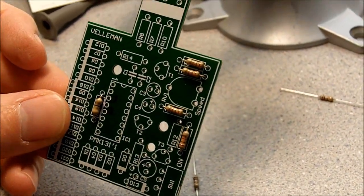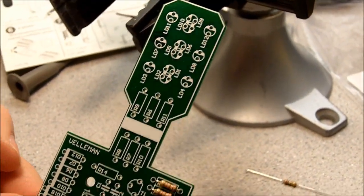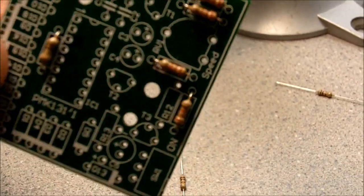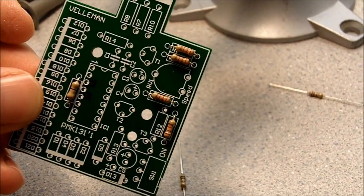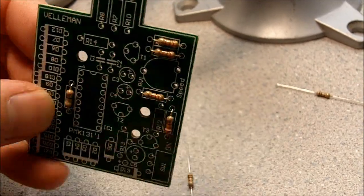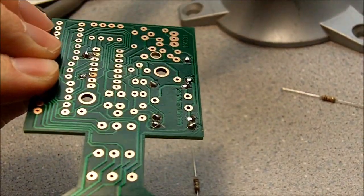All right, this is Malachi's first circuit board that he's ever soldered, and there are his first five resistors that he put in, and he's doing a really good job.